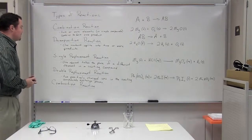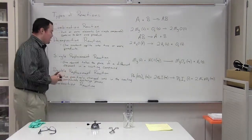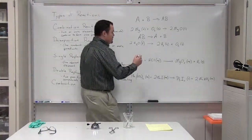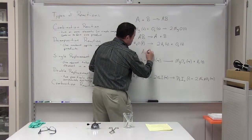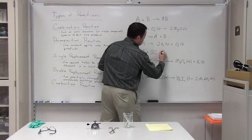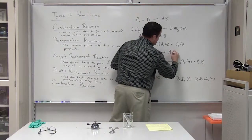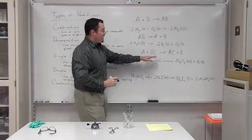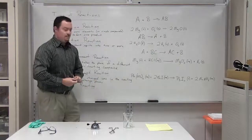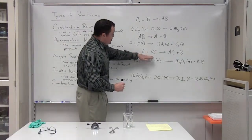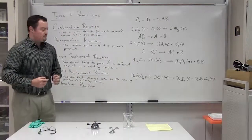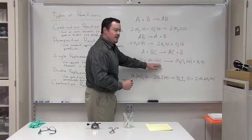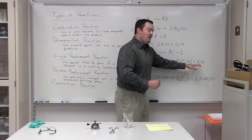Our third type of reaction is a single replacement reaction. This is where one element takes the place of a different element in a reacting compound. The generic formula for a single replacement reaction is A plus BC reacts to form a new product AC plus B. What you see happening is that A and B have simply switched places. An example is reacting magnesium metal with hydrochloric acid to form magnesium chloride and hydrogen gas.